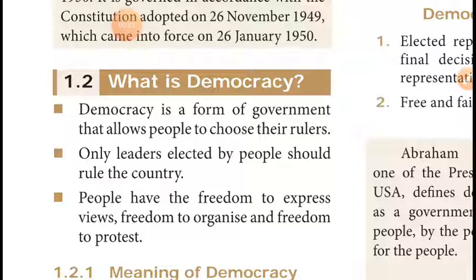Now we are going to discuss what is democracy. Democracy is a form of government that allows people to choose the ruler. In democracy, only the people can elect their representative or choose the representative. When you compare with other types of government, democracy is the only one where people can elect their representative.